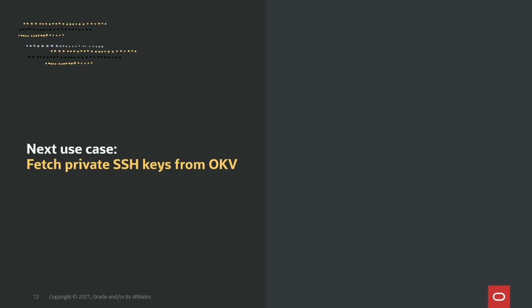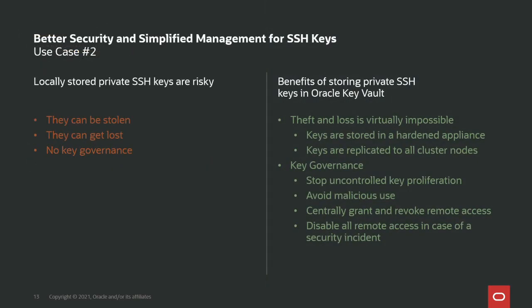The second use case is fetching private SSH keys from OKV. The risk with private SSH keys stored on your hard drive is that they can be stolen, they can get lost, and you have no key governance. By putting private SSH keys into OKV, theft and loss is virtually impossible — the keys are stored in a hardened appliance, and everything stored in OKV is replicated across all cluster nodes. It also provides key governance: you can stop uncontrolled key proliferation, avoid malicious use, centrally grant and revoke remote access, and disable all remote access enterprise-wide in case of an ongoing security incident.